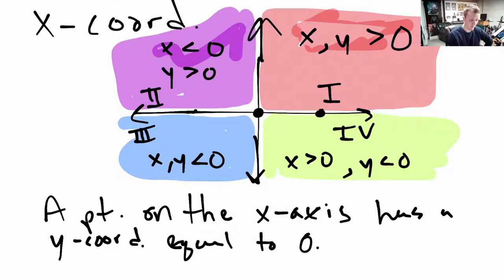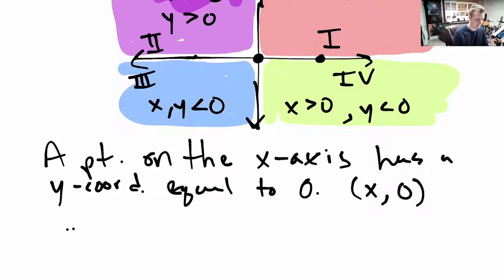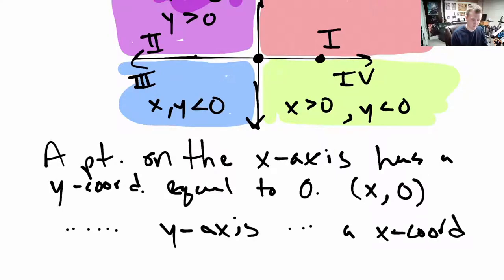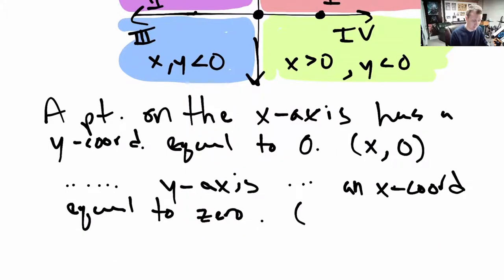If I pick a point on the x-axis, it's a certain distance to the right, but how high up or down is it? It's not — so it's at a height of zero. Every x-coordinate is something, but every y-coordinate for points on the x-axis is just zero. A point on the y-axis has an x-coordinate equal to zero. If I pick any point on this vertical line, there's some distance up for it, but how far left and right is it? It's not. So those look like this: a zero x-coordinate and some distance up or down.